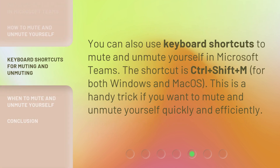You can also use keyboard shortcuts to mute and unmute yourself in Microsoft Teams. The shortcut is Control plus Shift plus M for both Windows and Mac OS. This is a handy trick if you want to mute and unmute yourself quickly and efficiently.